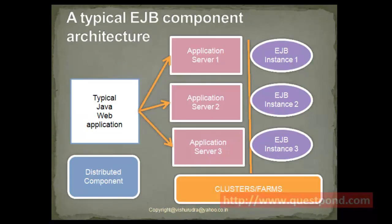Shown is a complete Java web application making use of the EJB component. A typical Java web application consisting of JSP, Servlets, and model will now invoke EJBs, which can be present across various application servers. We have more than one application server, each having its own instance of EJB. A collection of application servers put together to help in load balancing are also known as clusters or farms. Since EJBs are by default distributed components, we get a distributed architecture-based web application providing high performance and scalability. If the number of users increases, we can easily leverage this by adding a new application server and replicating the EJB instance in it.